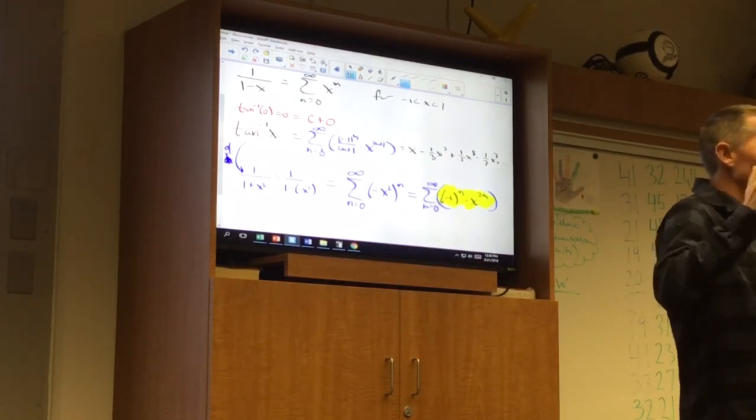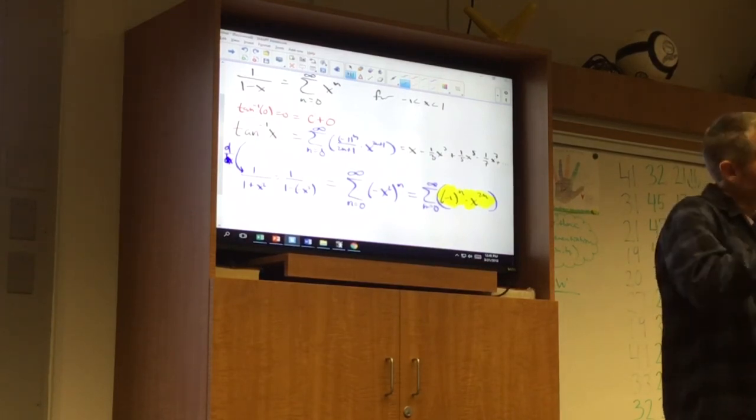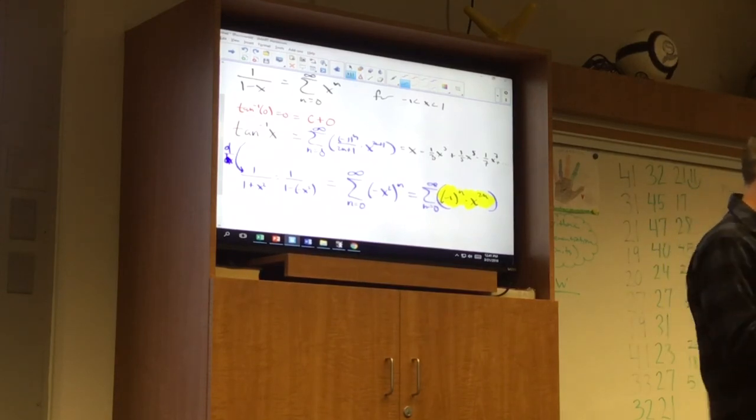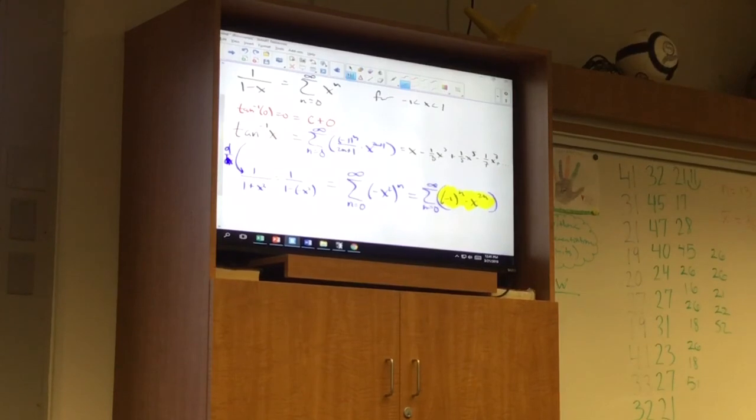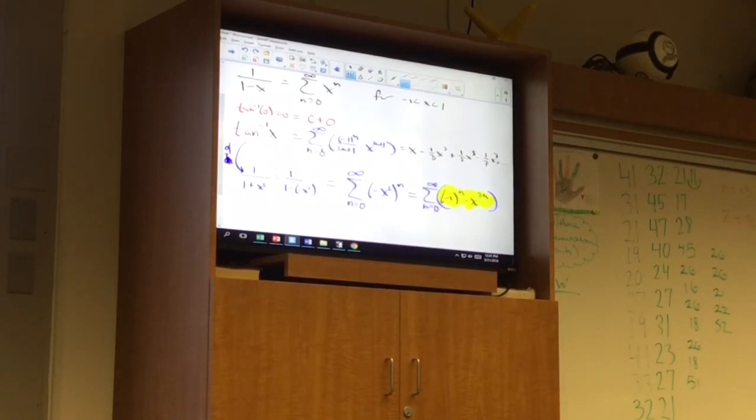So, it's really saying the denominator and the exponent are always the same and they're always the odd guys. Right? So, the negative 1 at the end alternates. Positive, negative, positive, negative, positive, negative. And the denominators and powers are 1, 3, 5, 7, 9, 11, 13, dot, dot, dot.